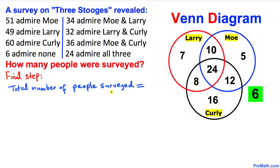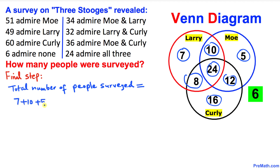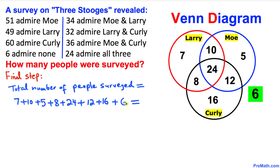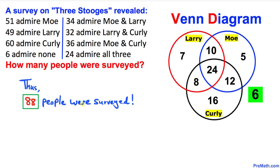Now for the final step: let's calculate the total number of people surveyed. We add all the individual numbers: 7 plus 10 plus 5 plus 8 plus 24 plus 12 plus 16 plus 6. Adding them all up gives us 88. So 88 people were surveyed — that's our final answer. Thanks for watching, and please don't forget to subscribe to my channel for more exciting videos!